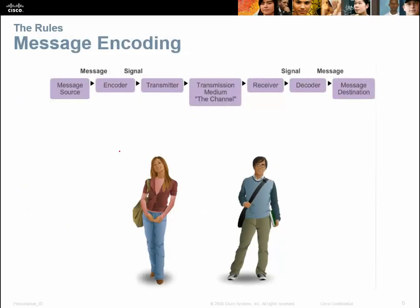When we encode our messages, much like we would in regular speech, we have our message source, we encode it, and we put it in some type of package. We might write our message down on paper, record it as audio, or in a PowerPoint. We transmit that — the medium is the transmission, which might be email or hand delivery. The receiver gets it, decodes it, might open the email, or put a CD into a player and listen to the message.